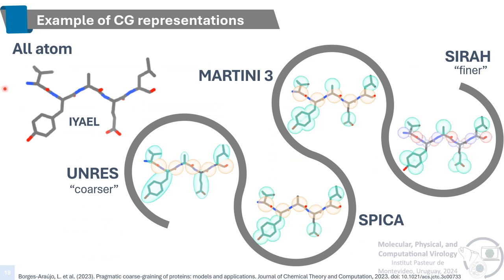Here we can see a visual representation of the grouping and position of beads using a peptide as an example. We can also see that the resolution goes from coarser with the two beads of Ambras — one for the backbone atoms and one for the side chain atoms — to a finer resolution with Syrah, using three beads for the backbone atoms and up to five beads for the side chain atoms.